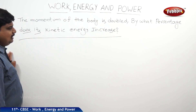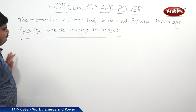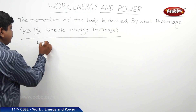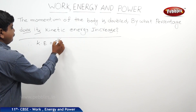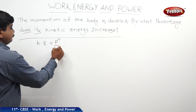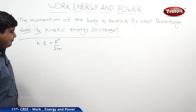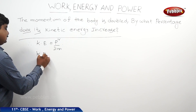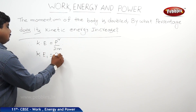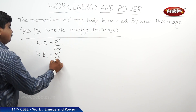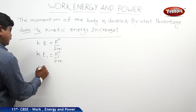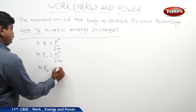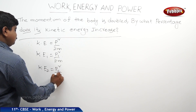The way to solve this problem: as we know, KE is equal to P squared by 2m. From this we can write KE1 is equal to P1 squared by 2m, as well as KE2 is equal to P2 squared by 2m.